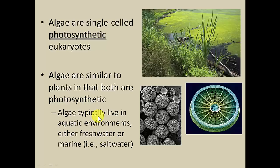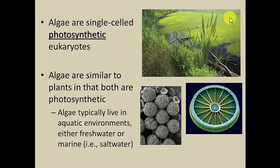Most of the time algae are going to be found in the water, and oftentimes they become noticeable in the form of pond scum. What you see — all this green stuff you might call moss or pond scum — is actually kind of like a big colony of algae, of which there can be many different types.